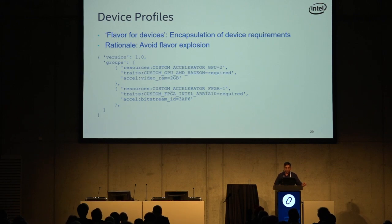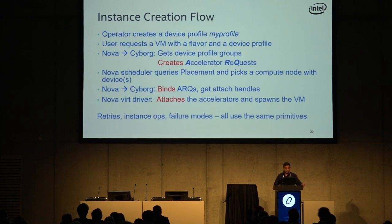So that's a device profile. Now how do we put it all together? What's the actual workflow for Nova and Cyborg to work together?